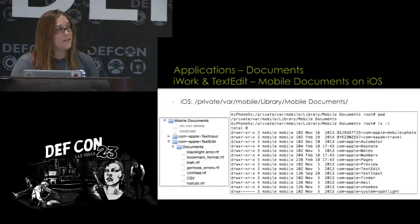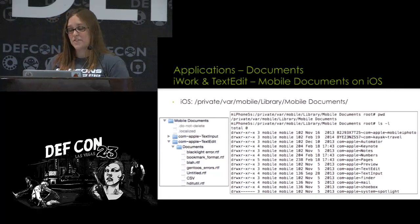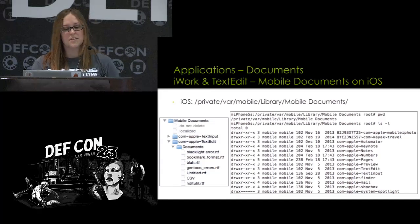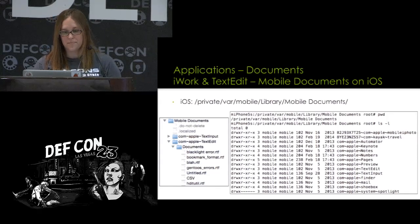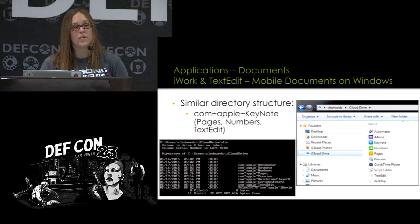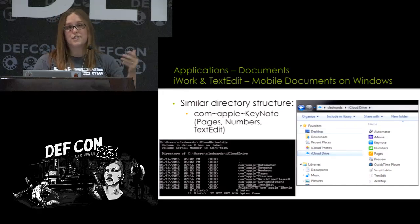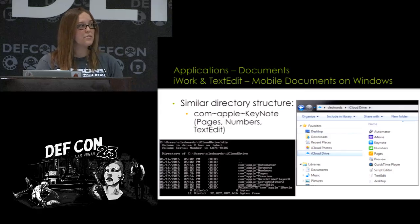On iOS the same file structure appears under /private/var/mobile/Library — you have that mobile documents directory looking very similar to OS X. On Windows it's the same thing — one of the few things that does sync down to Windows — with the mobile documents directory under your user directory.